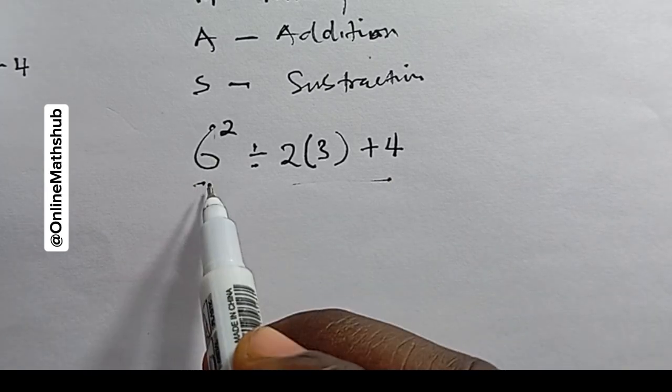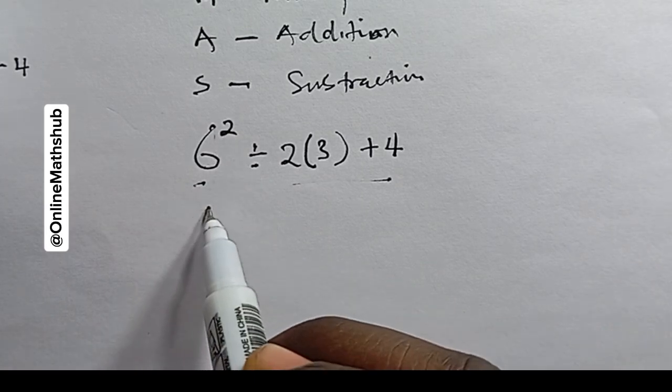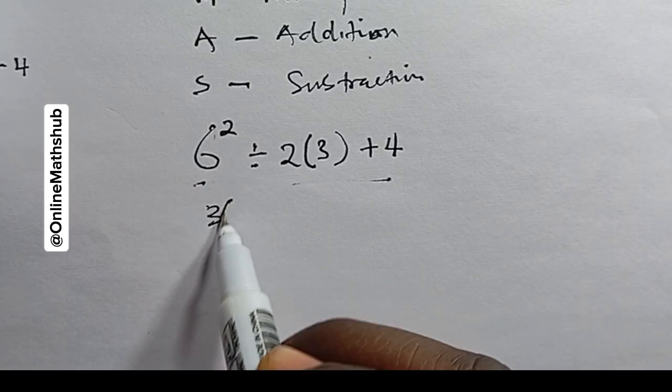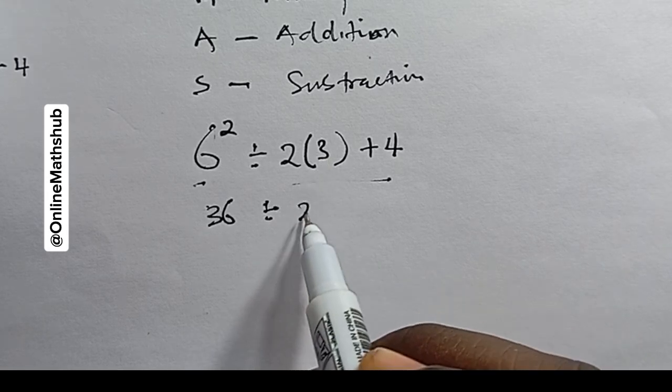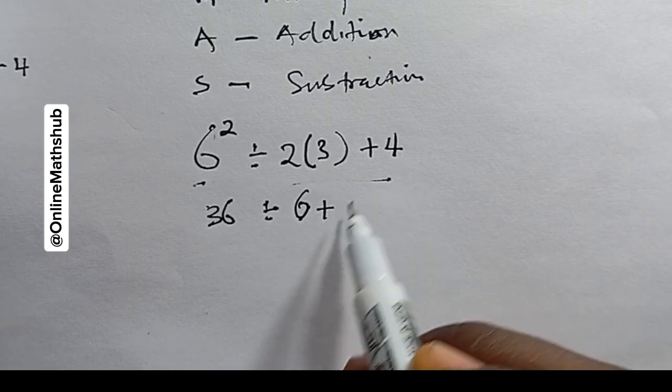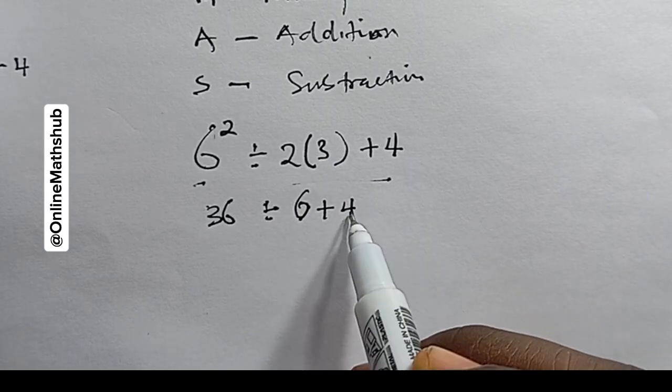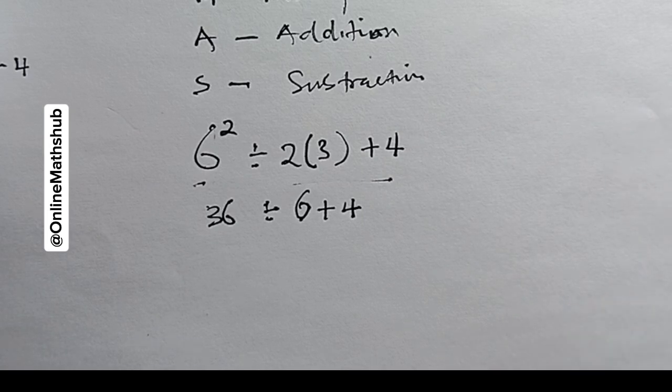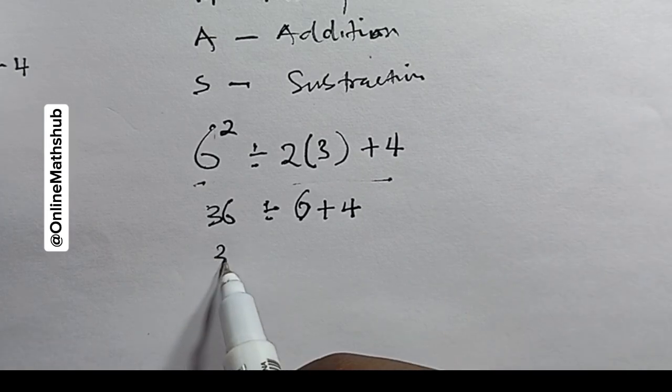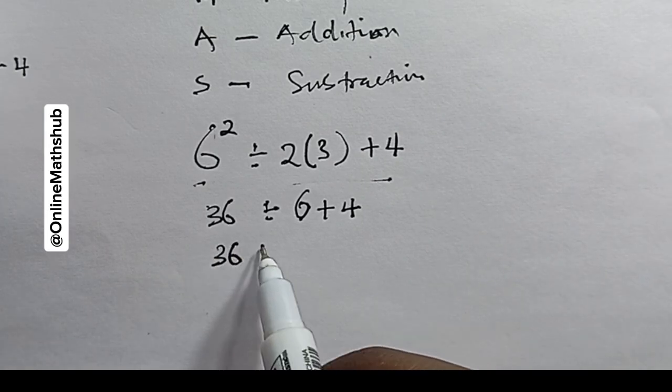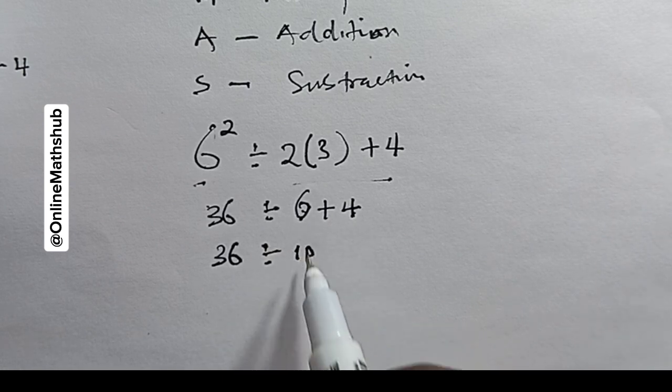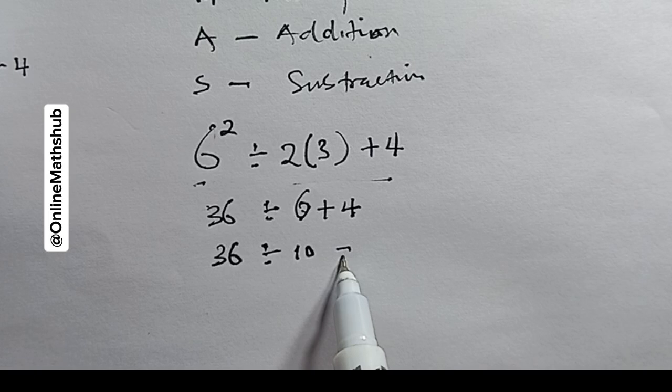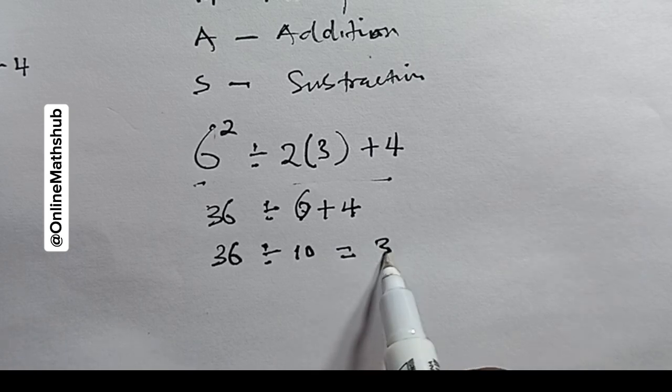Someone might calculate 6² as 36, then 2 times 3 equals 6. Without applying BODMAS, one might proceed as 36 ÷ 6 + 4 = 10, then 36 ÷ 10 = 3.6. But is that actually the correct answer?